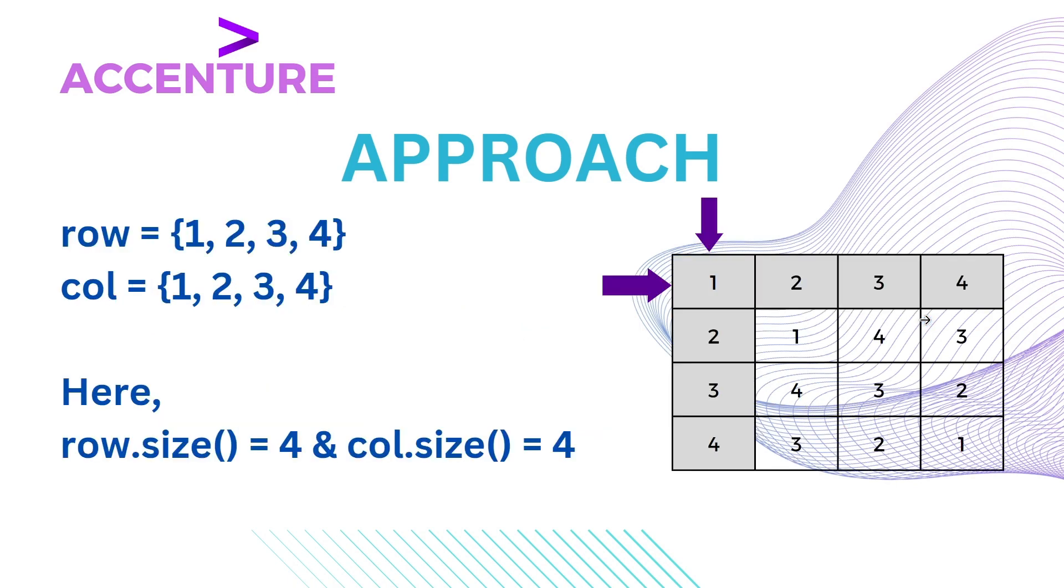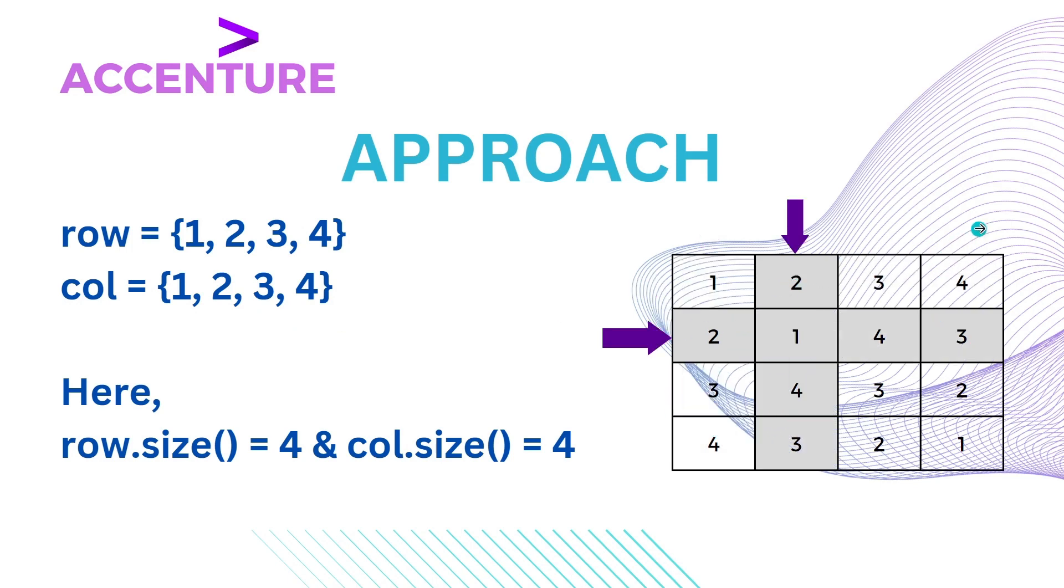Now we will see another example. Here also we will follow the same procedure. Observe that the first row and first column contains all numbers. Let's check the second row and second column.